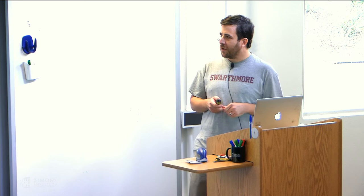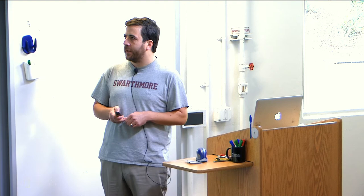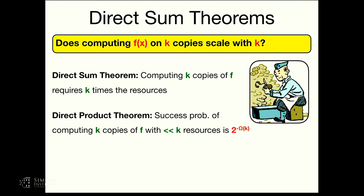I want to start by recapping direct sum problems. In grad school, Amit always described this in terms of peeling potatoes. You've got some function you want to compute. How much resources does it cost to compute k times? A direct sum theorem might say that computing k copies requires k times the resources. Related is direct product: if you've got a randomized computation model with error and you want to compute k copies with somewhat less than k times resources, a direct product theorem might say the success probability goes down exponentially.